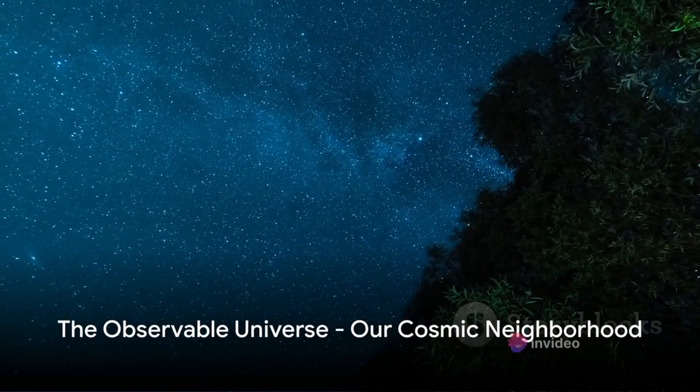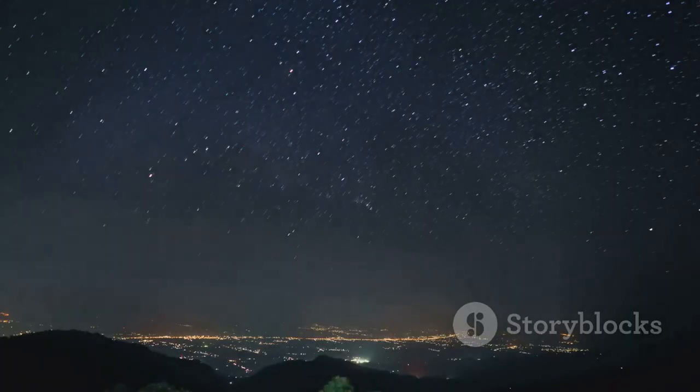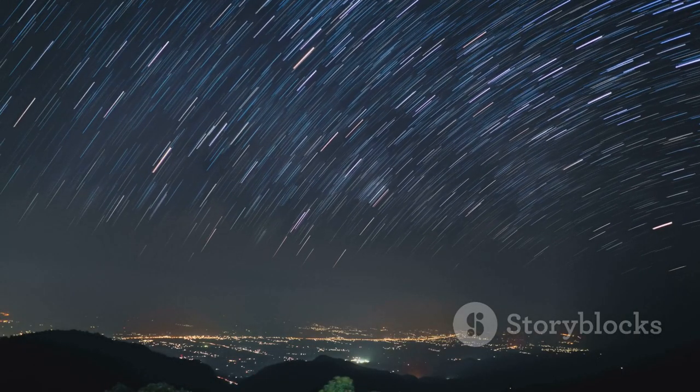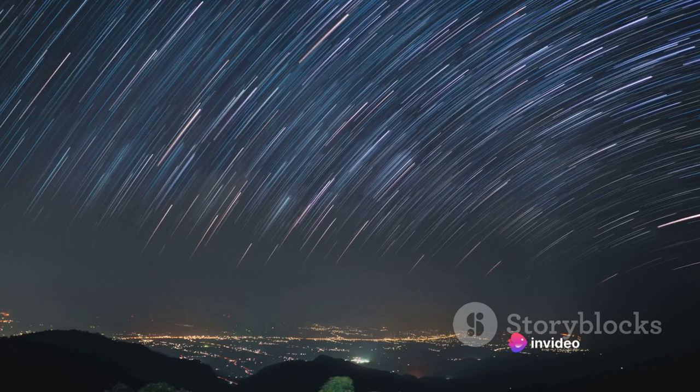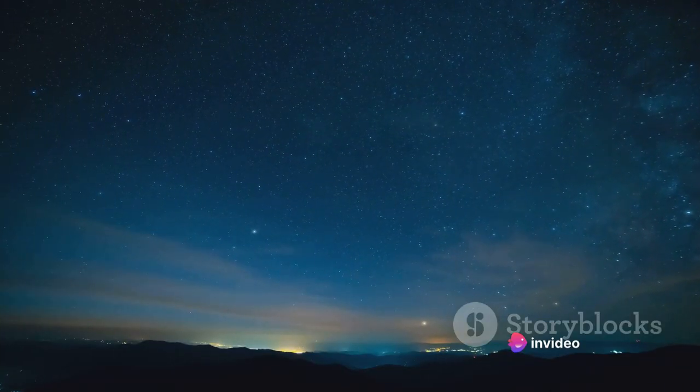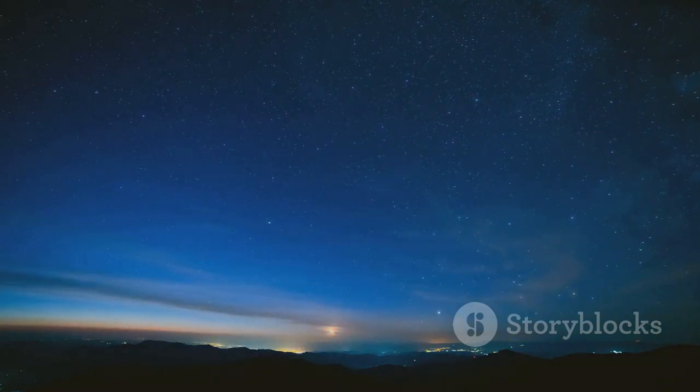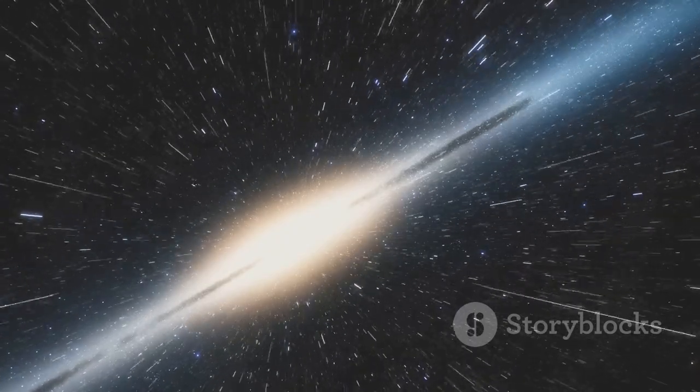The part of the universe that we can observe from Earth is known as the observable universe. Now, let's dive deeper into this concept. Imagine you're standing on a hilltop on a clear, moonless night. As you look up, you see an array of stars twinkling in the dark expanse above. Each of these stars is part of our observable universe.